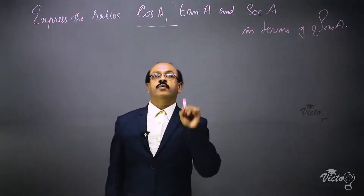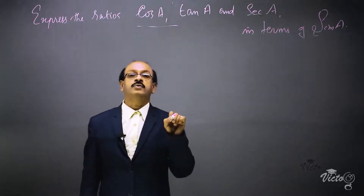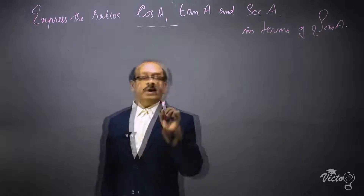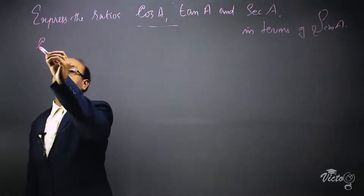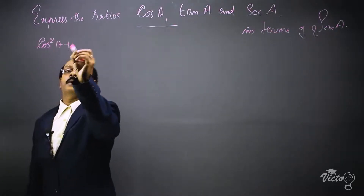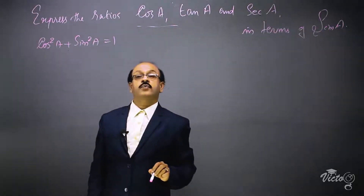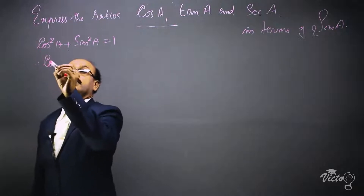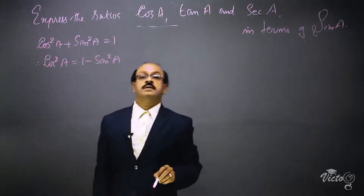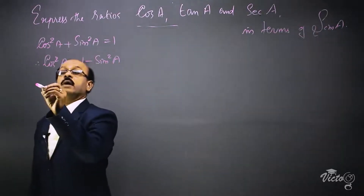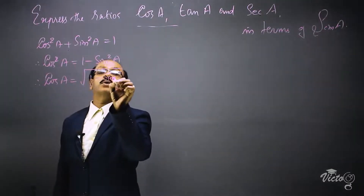We are going to write cos A in terms of sin A. For this, we use the formula connecting sin and cos: cos²A + sin²A = 1. From this, cos²A = 1 - sin²A. Therefore, cos A = √(1 - sin²A).